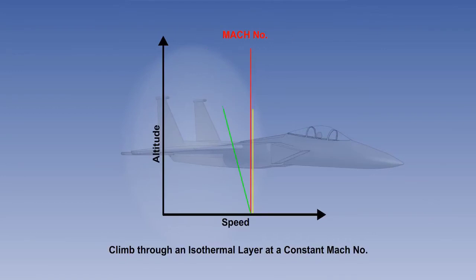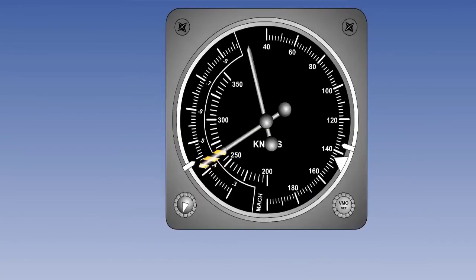In the descent, the reverse will apply. Finally, we'll look at the Mach airspeed indicator. As the name suggests, the Mach airspeed indicator combines the function of an airspeed indicator, or ASI, and a Mach meter into a single instrument. There are two basic types of Mach airspeed indicators.